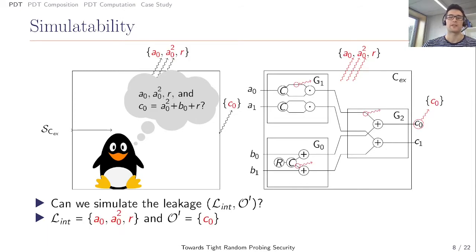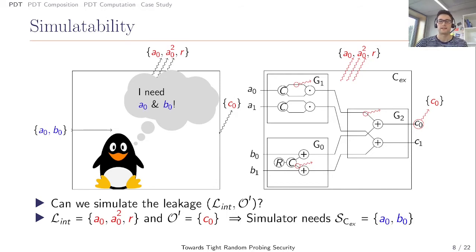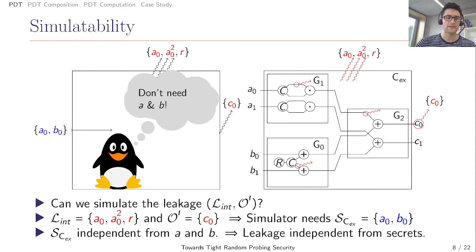Our security proofs we will do with a simulator, so we also need a simulator to simulate the leakage. Let's consider an example, the internal leakage A0 and A0 square and R and the output leakage C0. The simulator has to simulate all four values. For A0 the simulator needs A0 as input. With A0 it can also simulate A0 square. And the random value R it can simulate because it is chosen uniform at random. Since A0 square and R are already simulated, the simulator also needs B0 for the simulation of C0. As you can see, A0 and B0 are only one share of the secret A and B. This means that the leakage is independent from the secret.